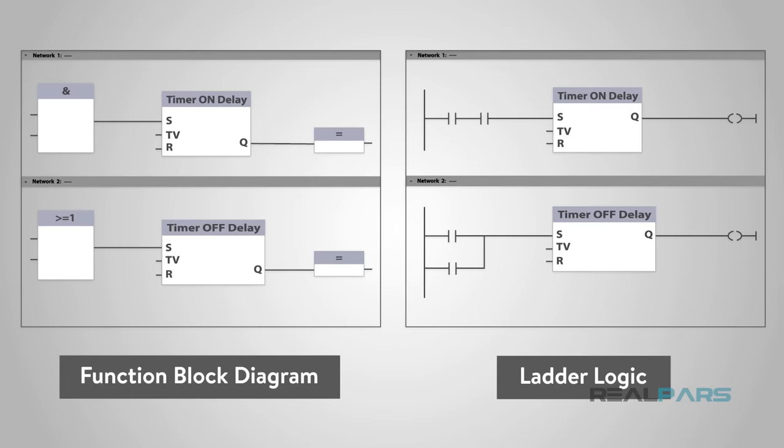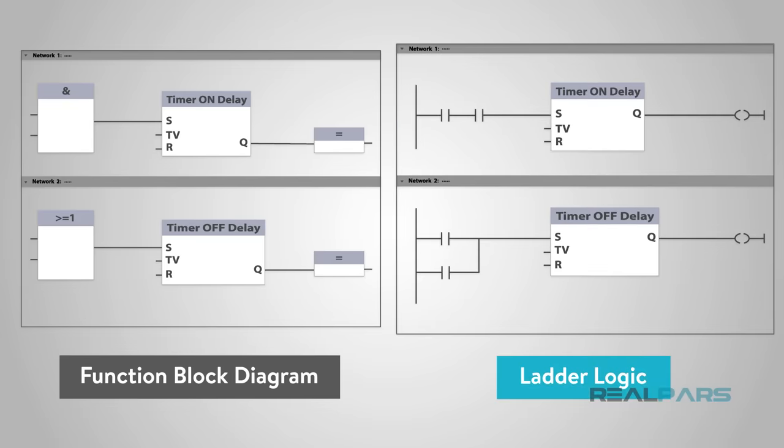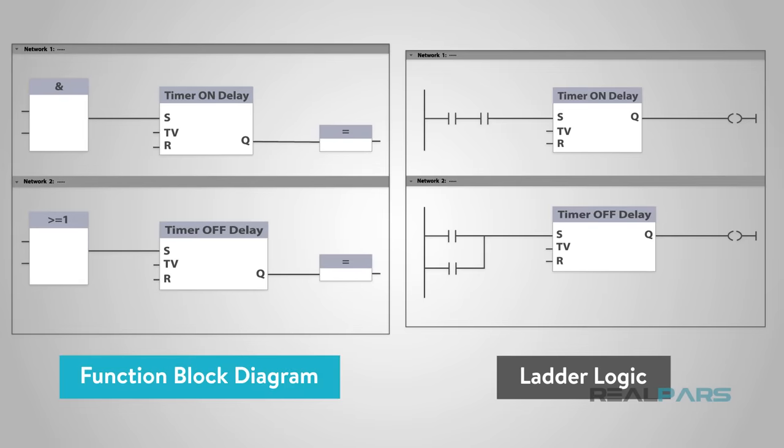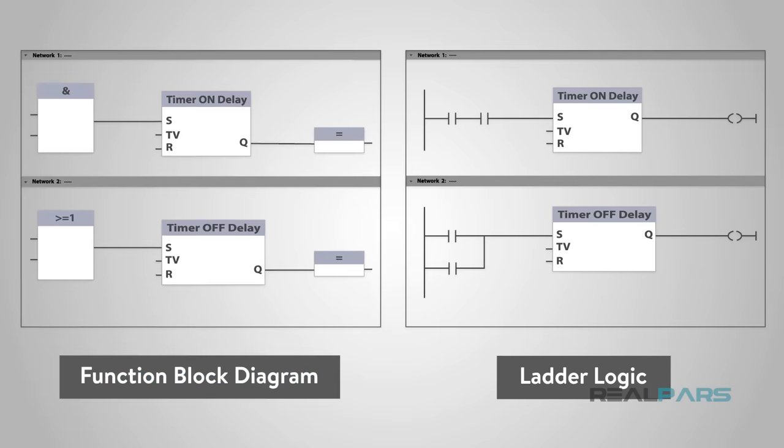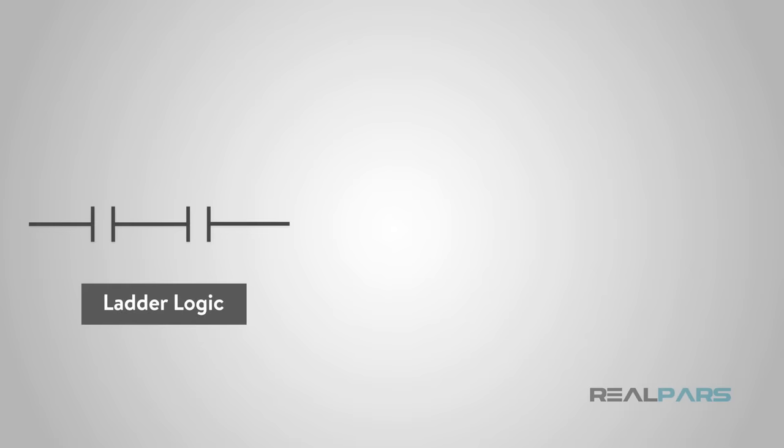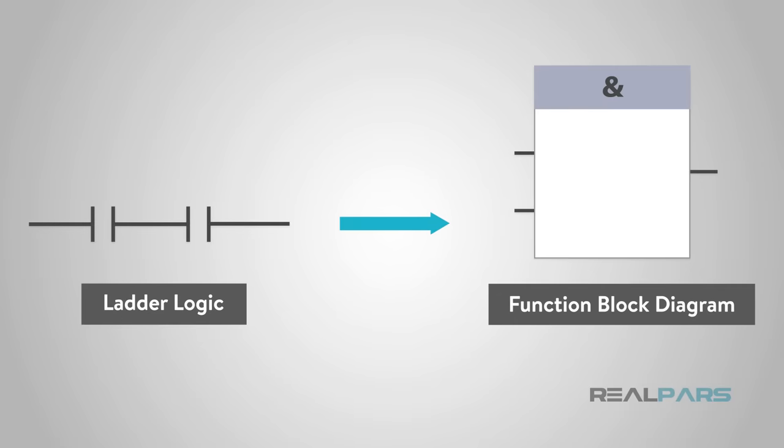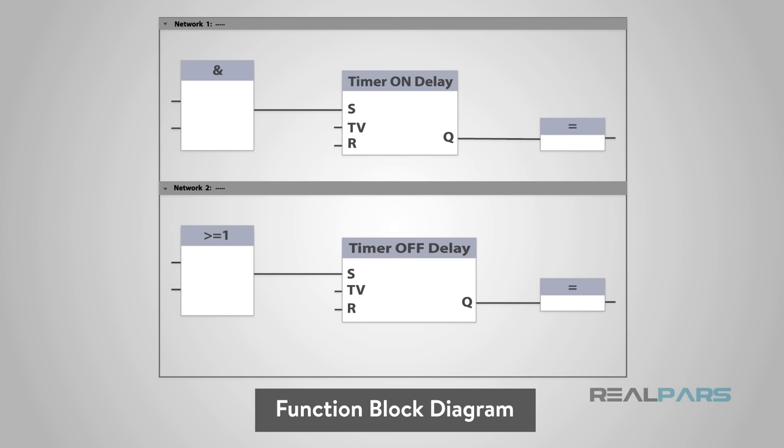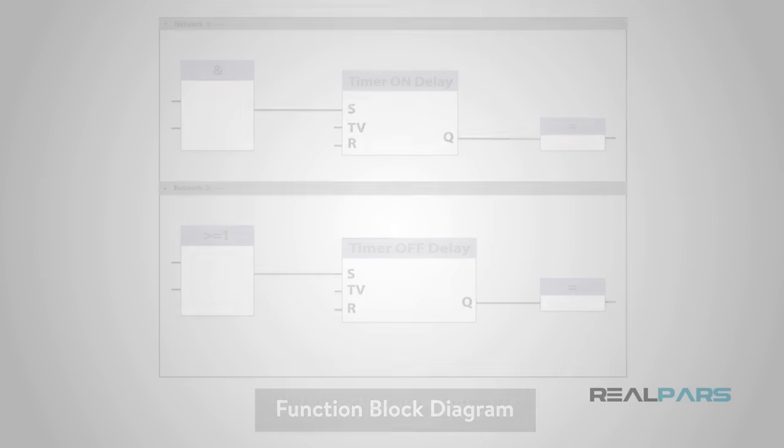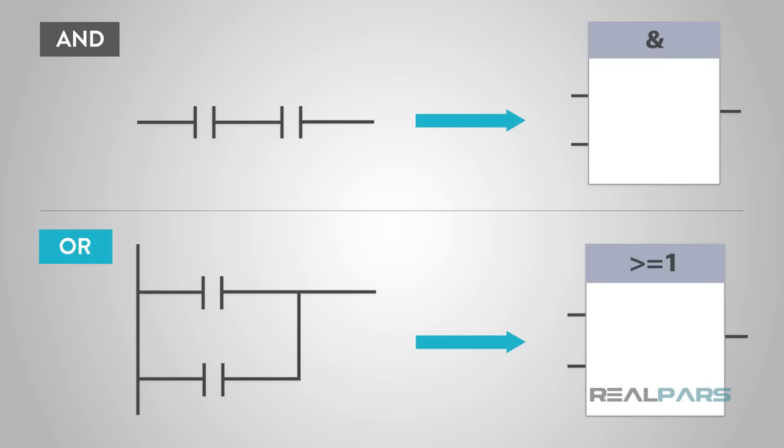Let's take a look at what we now know. Ladder logic has been around for a long time and has been the universal programming language for PLCs. Function block programming has been steadily gaining popularity in the PLC industry over the past decade or so. Several manufacturers offer both programming options in their PLCs. Essentially, a single function block can take the place of an entire line of ladder logic. These blocks can be strung together to complete an entire program. Like ladder logic, function block diagrams are read left to right, top to bottom. We compared AND and OR logic function blocks with their ladder logic counterpart. Hopefully, you now have a firm grasp of their similarities and differences.